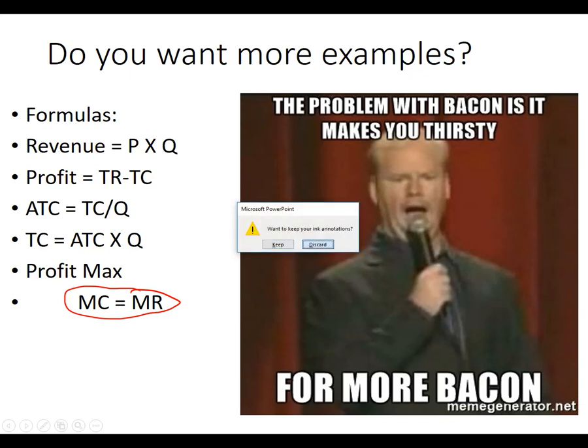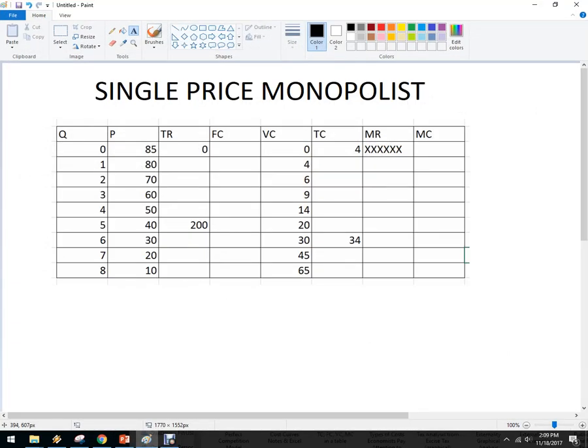Let's do one more example here in Paint. This is from a table. Okay. So here I've got my quantity and my price and I've got my total. I want to know what my total revenue is, my fixed costs, my variable costs, my total costs, marginal revenue, marginal costs. If you really want to be an all-star, pause the video, see how much you can do by yourself. And then I'll pick up in a second.